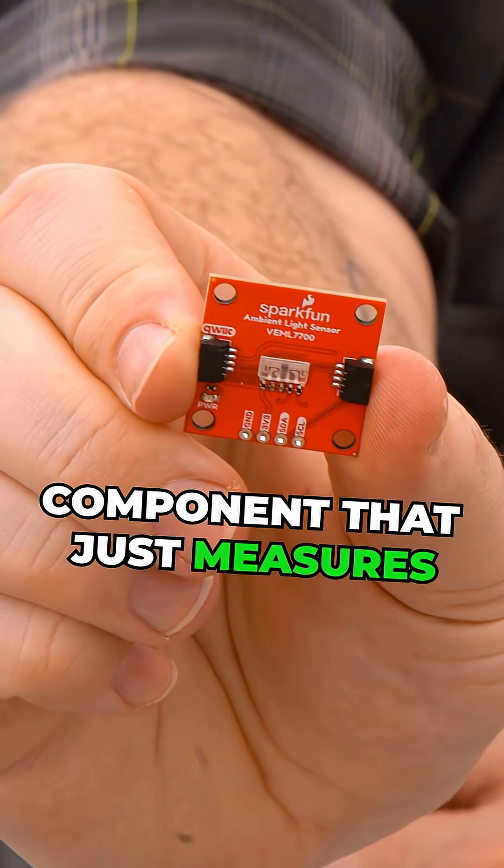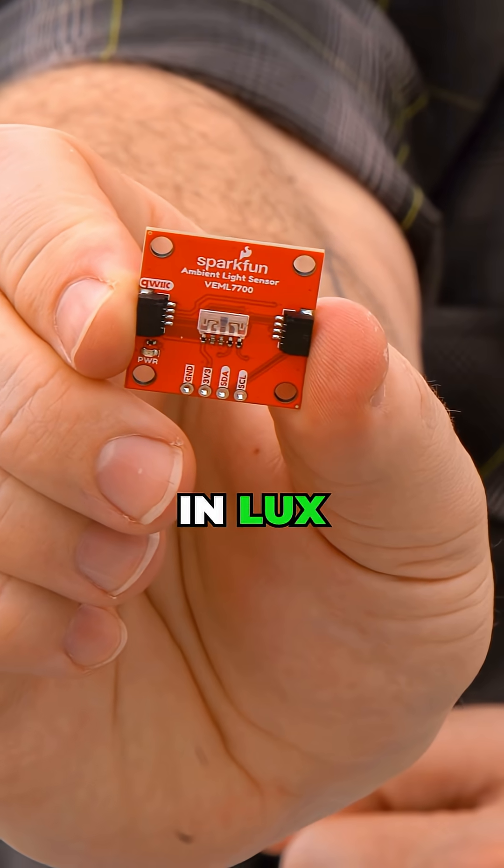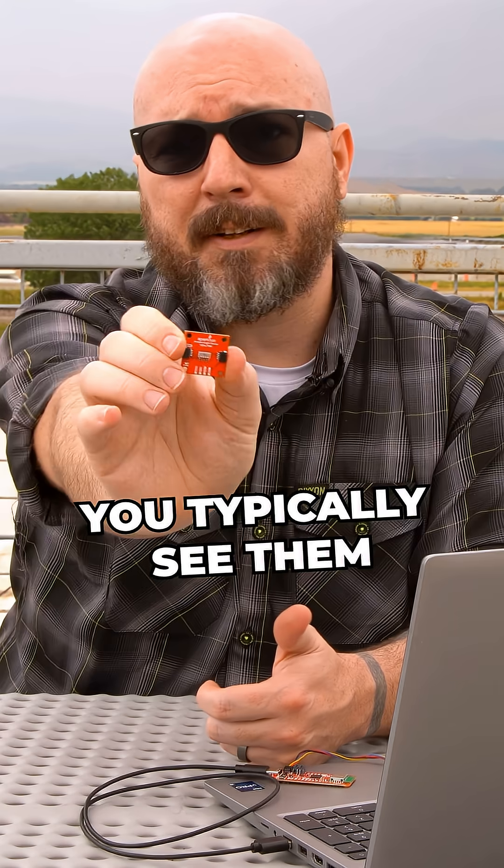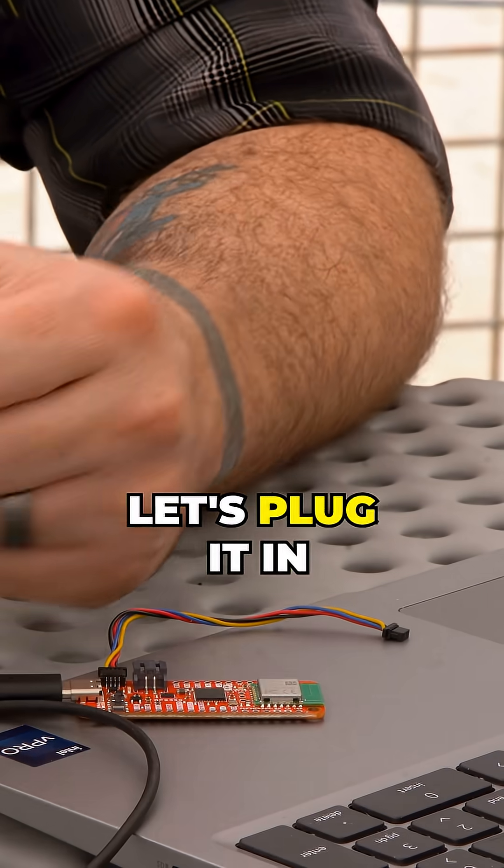An ambient light sensor is a very simple component that just measures the level of light in Lux and the surrounding environment. You typically see them in smartphones, laptops, and TVs. Let's plug it in and show an example.